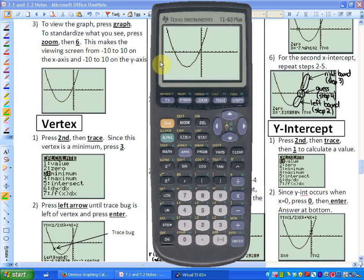What that does is it makes a viewing screen from negative 10 to positive 10 on the x-axis and negative 10 to positive 10 on the y-axis. So that always, if you press zoom and then 6, it will always standardize your window, which may or may not be helpful, which you'll see in the next lesson. Now we may have to adjust that window.